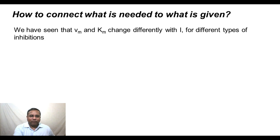We have seen that Vmax and Km change differently with I for different types of inhibitions. I myself got a little confused, but that is okay. With practice, you should be fine.